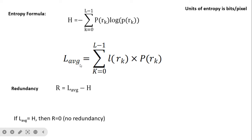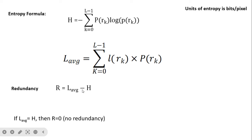The average code length L_avg is computed as the summation from k=0 to L-1 of the number of bits required to represent each gray level multiplied by its probability. Redundancy R = L_avg - H. When L_avg equals H, R equals zero, meaning no redundancy and no compression is possible. If there is a difference between L_avg and H, redundancy is present and compression can be applied.